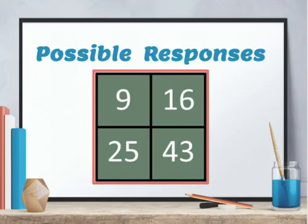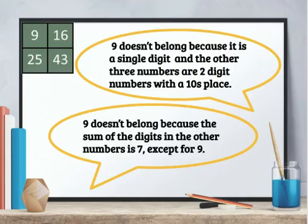Here are some possible responses, and perhaps one of these connects with how you thought about it. These responses are from both students and from adult learners such as yourself. Nine doesn't belong because it's a single digit and the other three numbers are two-digit numbers with a tens place.